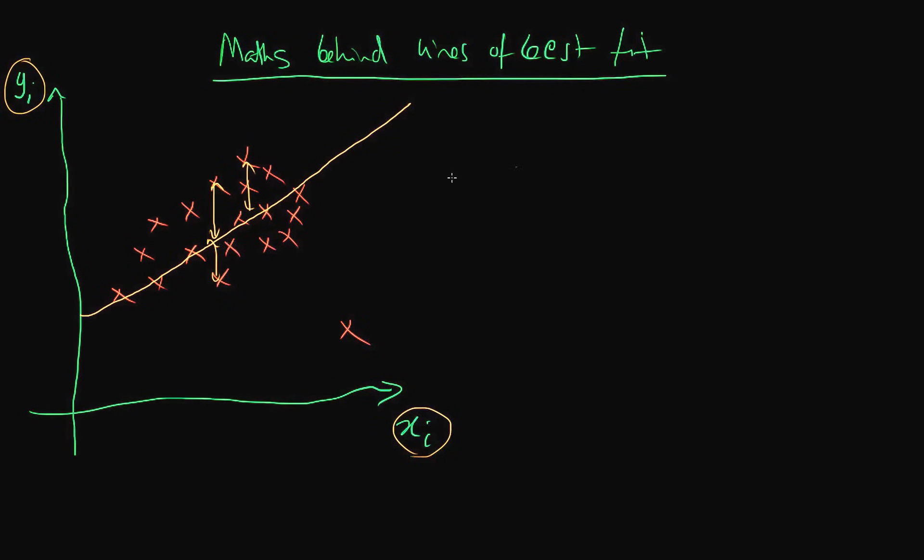Perhaps what we might do is we might minimize a sum which looks something like the sum across all points in our data set of the true value of Y minus the fitted value of Y.